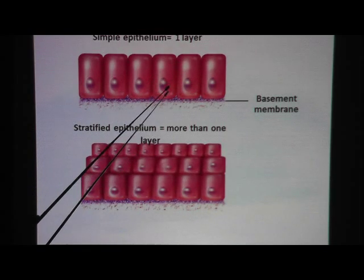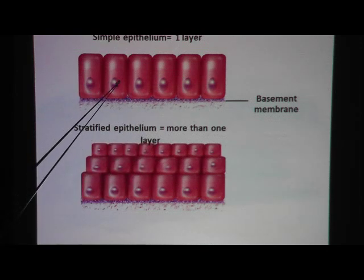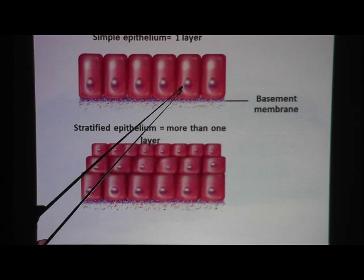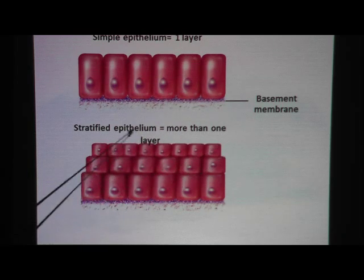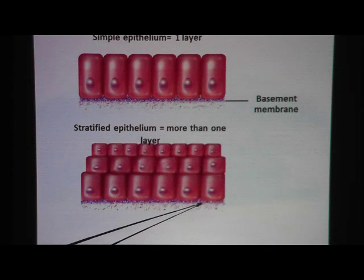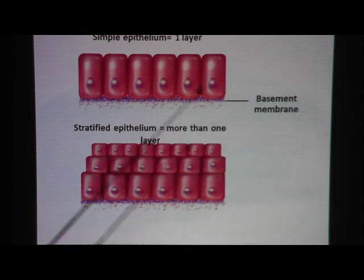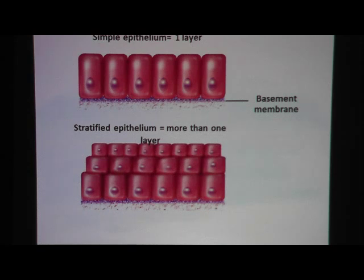If it's only one layer thick, this would be the basement membrane where the epithelium ends. One layer of cells thick is called simple epithelium. Stratified epithelium has more than one layer of cells. Notice that because it's lining something, it's going to have a free surface — a surface not touching another cell like it. It may be touching air, blood, or urine, but not another similar cell.